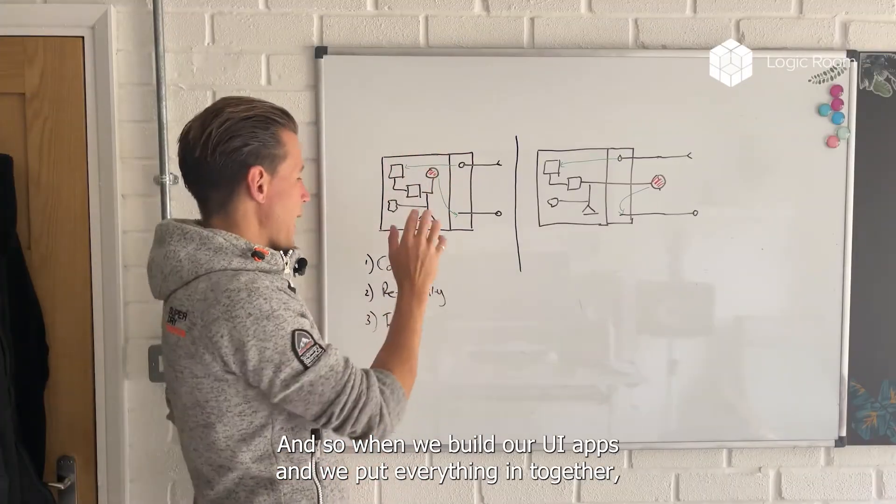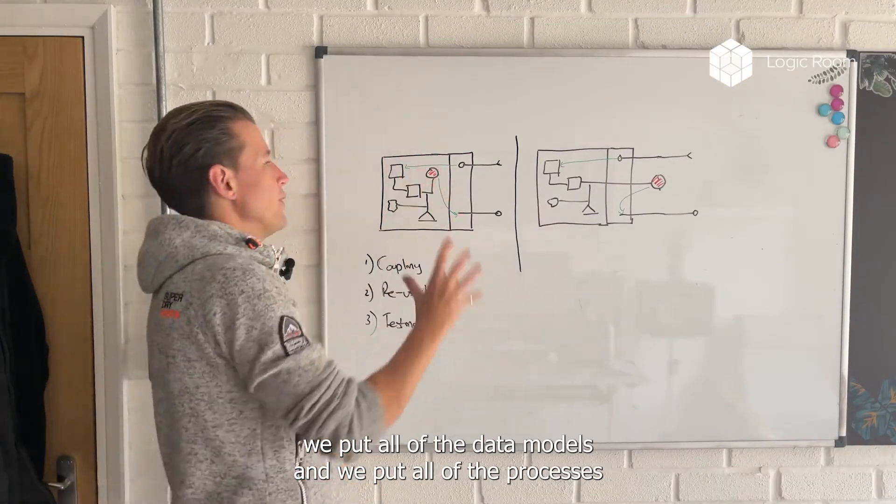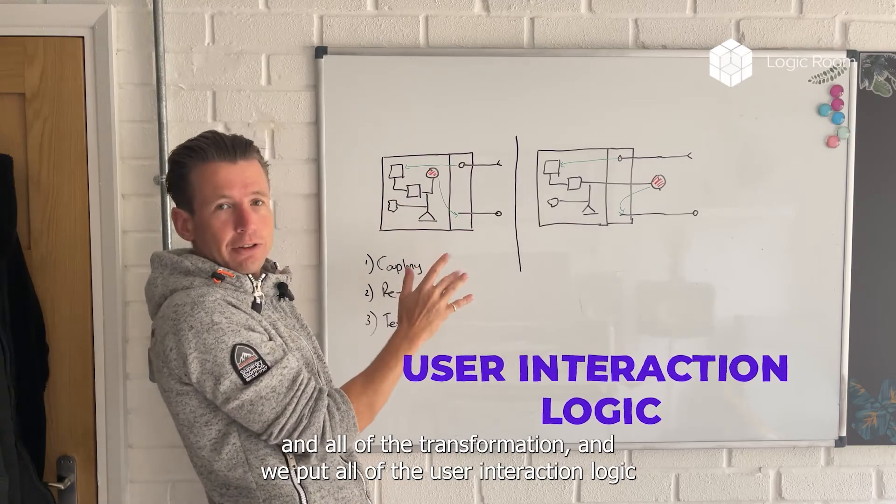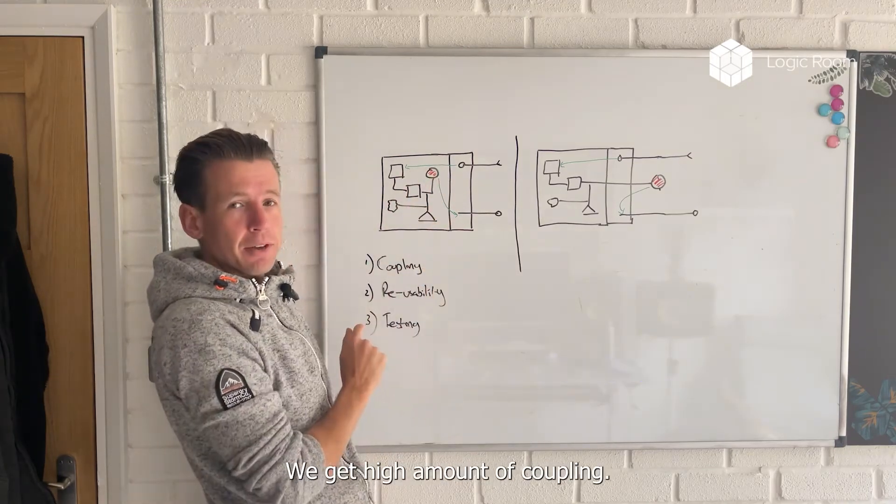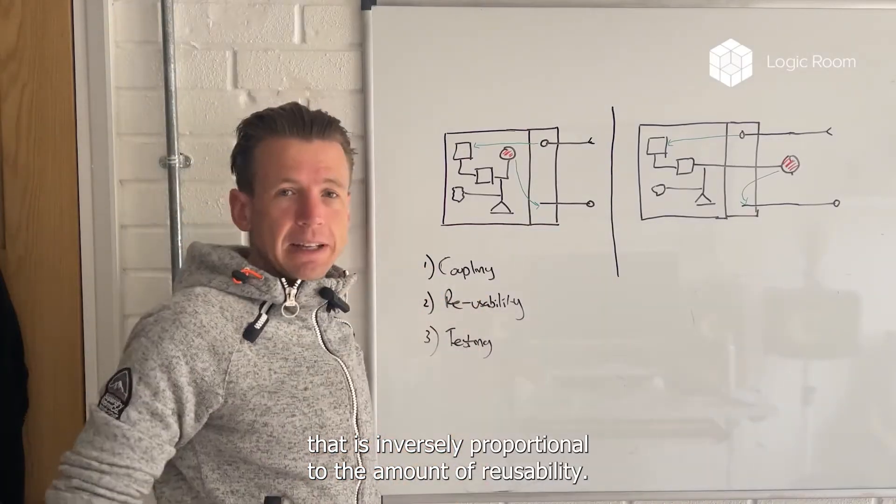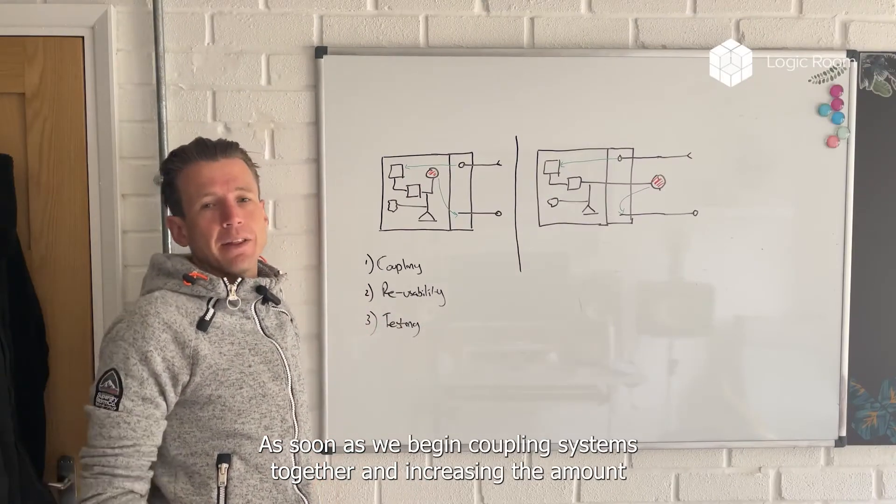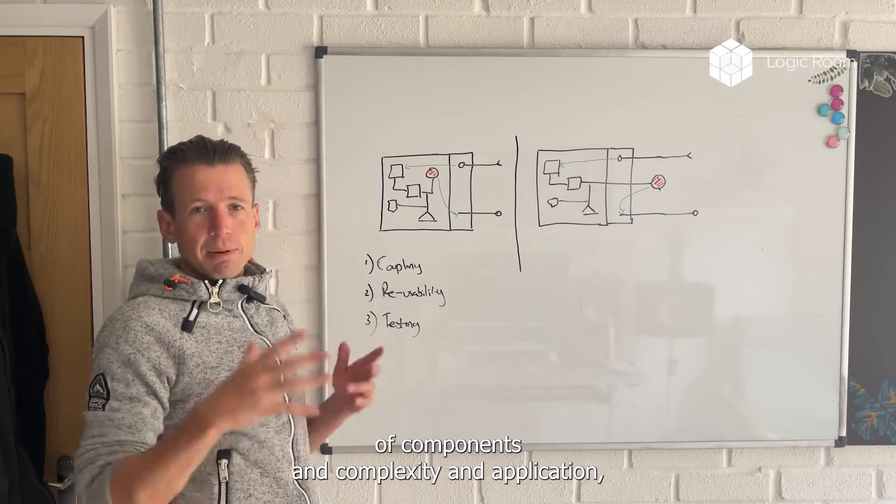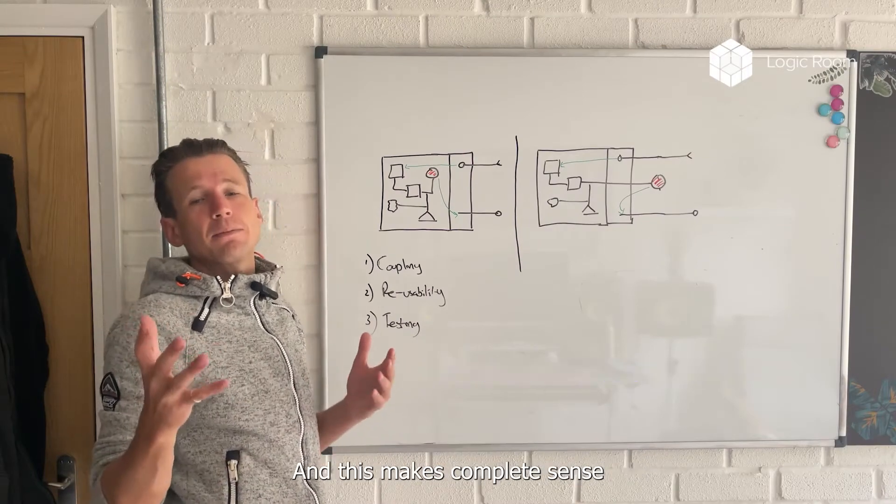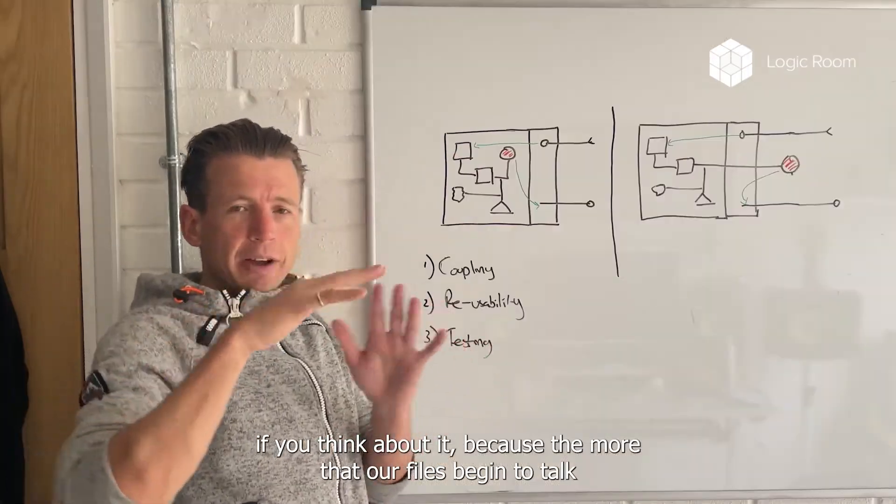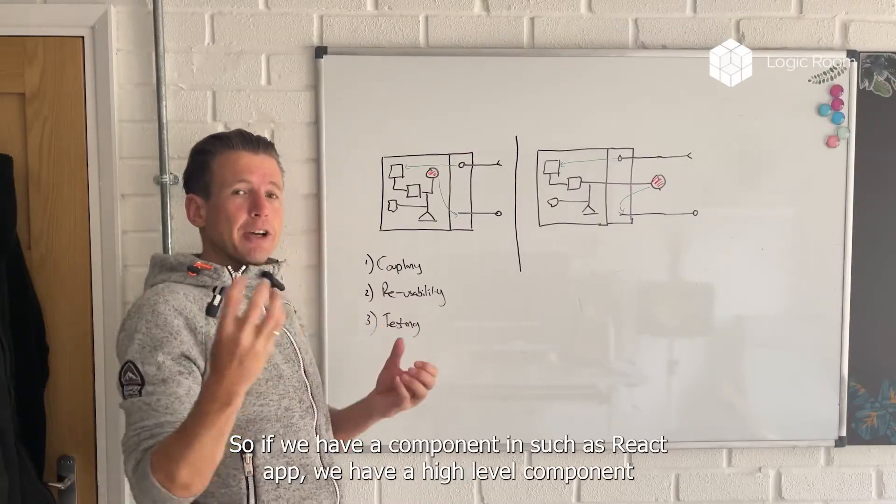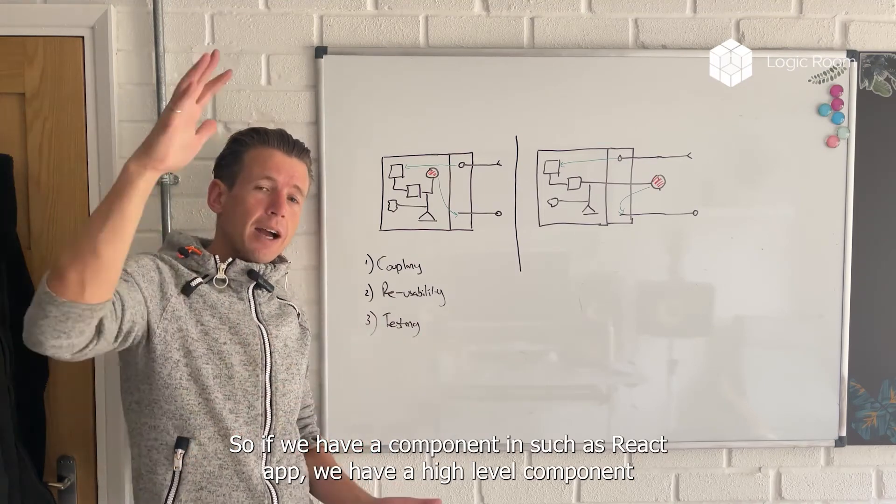And the more information that I can see in this file from this file also denotes the amount of coupling. And so when we build our UI apps and we put everything together - we put all of the data models, all of the processes, all of the transformations, all of the user interaction logic, all of the state - we get a high amount of coupling. When we get a high amount of coupling, that is inversely proportional to the amount of reusability. As soon as we begin coupling systems together and increasing the amount of components and complexity in an application, we increase the amount of coupling and automatically reduce the reusability. This makes complete sense if you think about it, because the more that our files begin to talk to each other, the more specific they become to that situation.